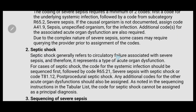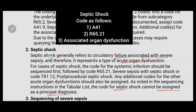Septic shock generally refers to circulatory failure associated with severe sepsis, therefore it represents a type of acute organ dysfunction. For cases of septic shock, the code for systemic infection should be sequenced first, followed by code R65.21 (severe sepsis with septic shock) or code T81.12 (post-procedural septic shock). Any additional codes for other acute organ dysfunction should also be assigned. Remember, the code for septic shock should never be assigned as a principal diagnosis. Sequence: first A41, second R65.21, third associated organ dysfunction.